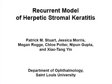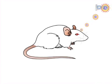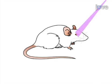The overall goal of this procedure is to study recurrent herpes simplex virus infection. This is accomplished by first infecting mice in such a way that they will become latently infected without corneal damage. After latency is fully established, the next step is to reactivate the virus by exposure to UVB light.